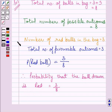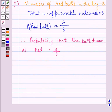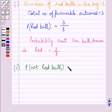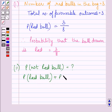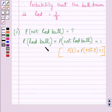Let us now start with the second part. We have to find the probability that the ball drawn is not red. Clearly, we can see these two are complementary events, and we know the sum of probabilities of complementary events is equal to 1. So we can write: probability of red ball plus probability of not red ball is equal to 1. We know probability of red ball is equal to 3 upon 8. So we can write 3 upon 8 plus probability of not red ball is equal to 1.